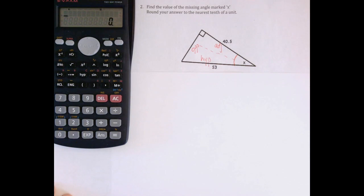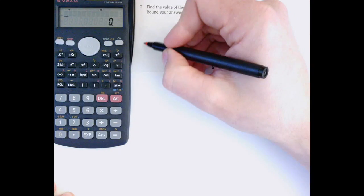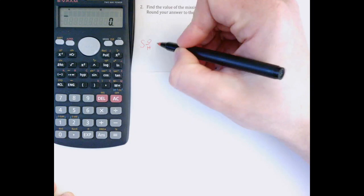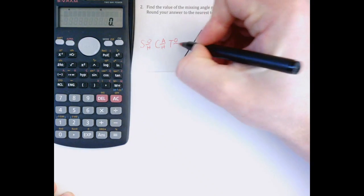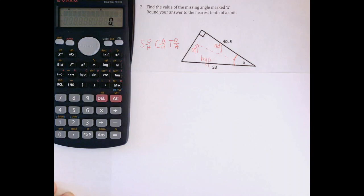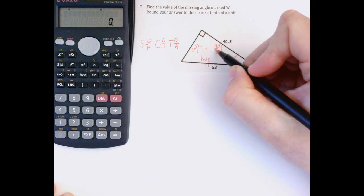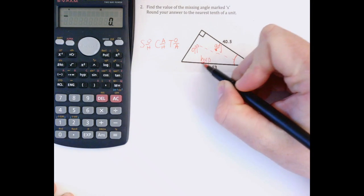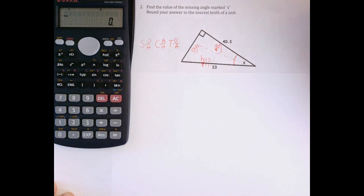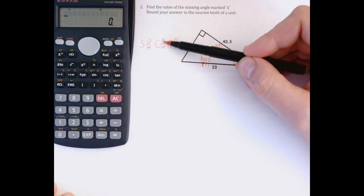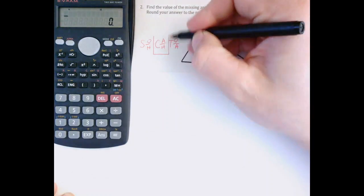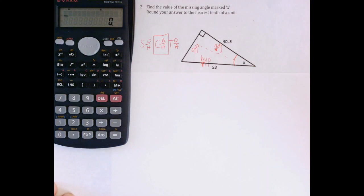Now the reason labeling sides is important is because once we write out the formulas SOH CAH TOA, we need to figure out which formula to use. In this case the two sides we have are A for adjacent and H for hypotenuse. The formula that uses A with H is this one in the middle. So I'm going to use the cosine version of SOH CAH TOA to solve for my angle.